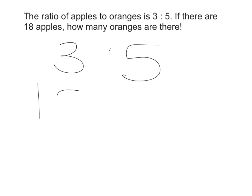I know that I've got 18. What did I do to that 3 to make it 18? I times it by 6, didn't I? So I've got to times this by 6, and 5 times 6 gives me 30. So therefore, there are 30 oranges.